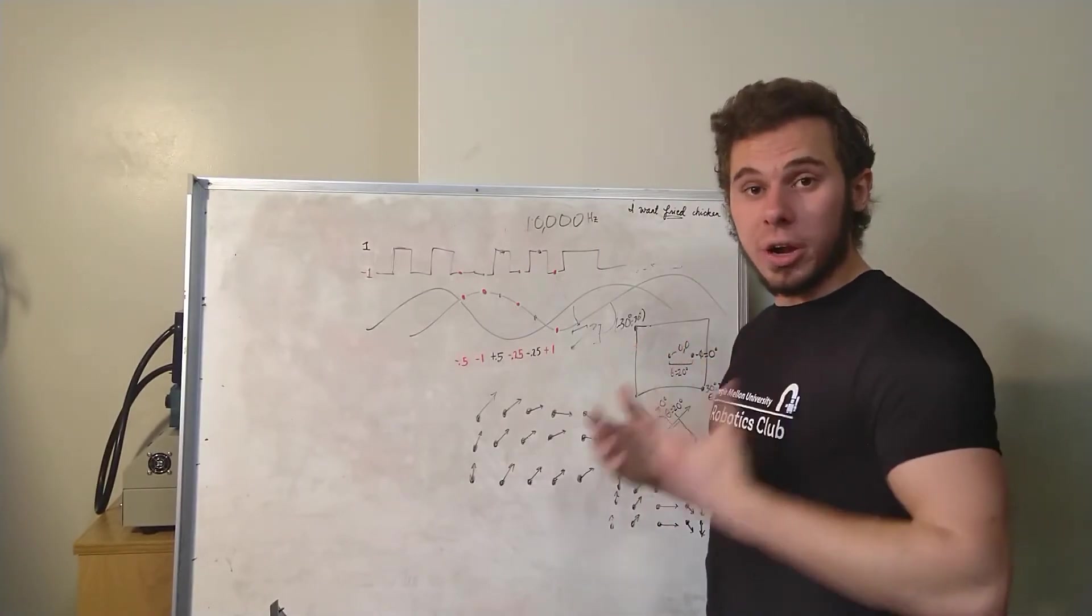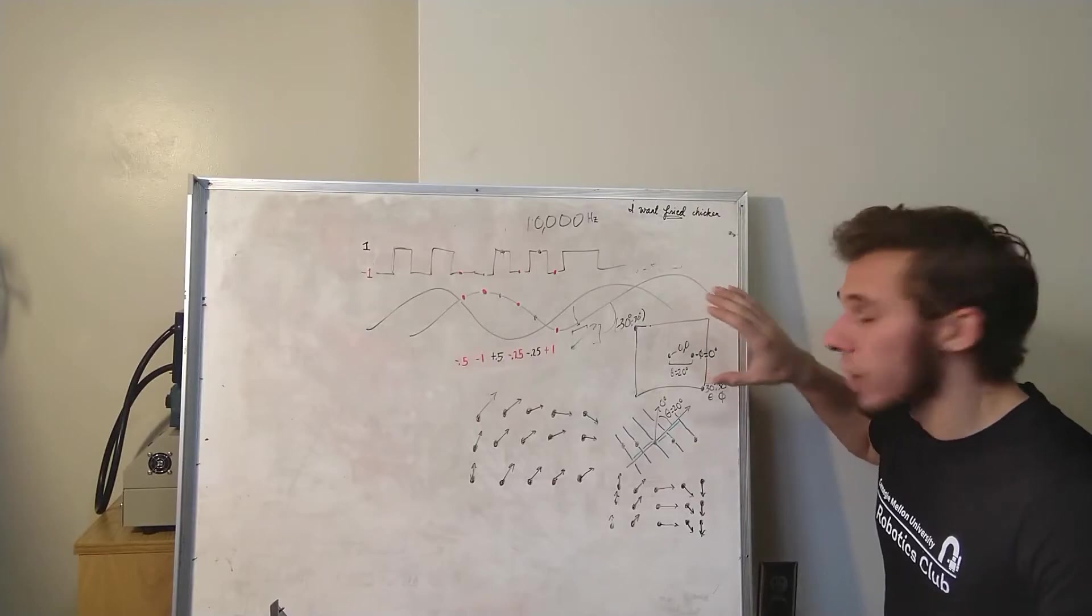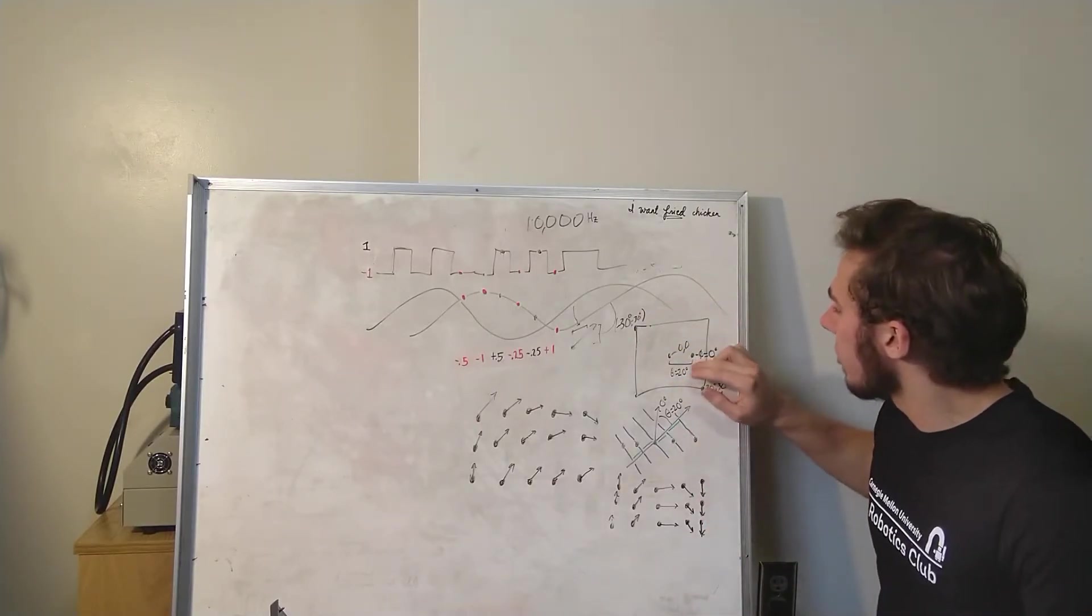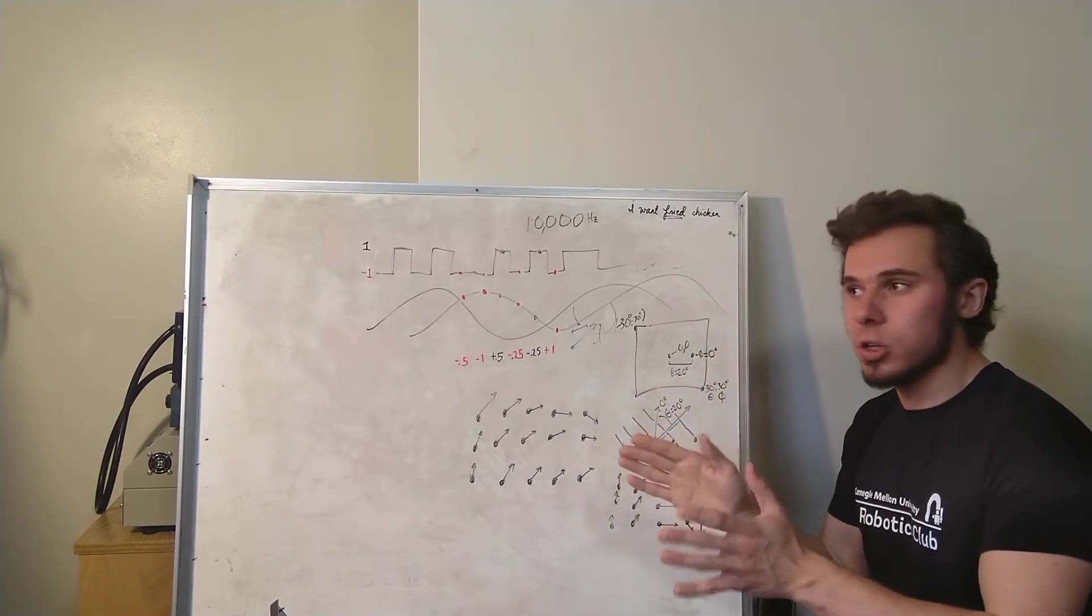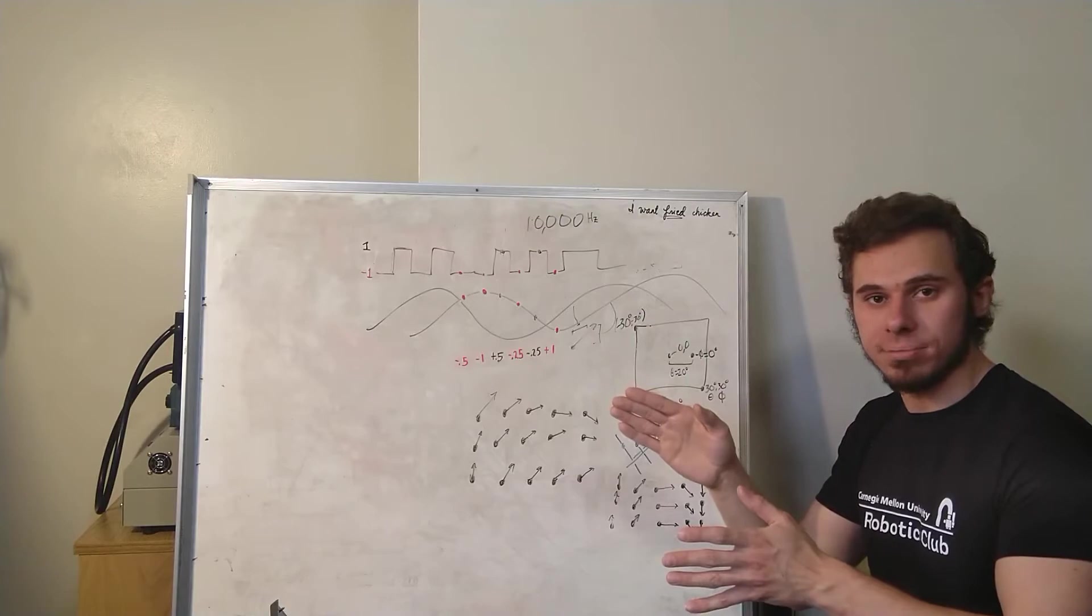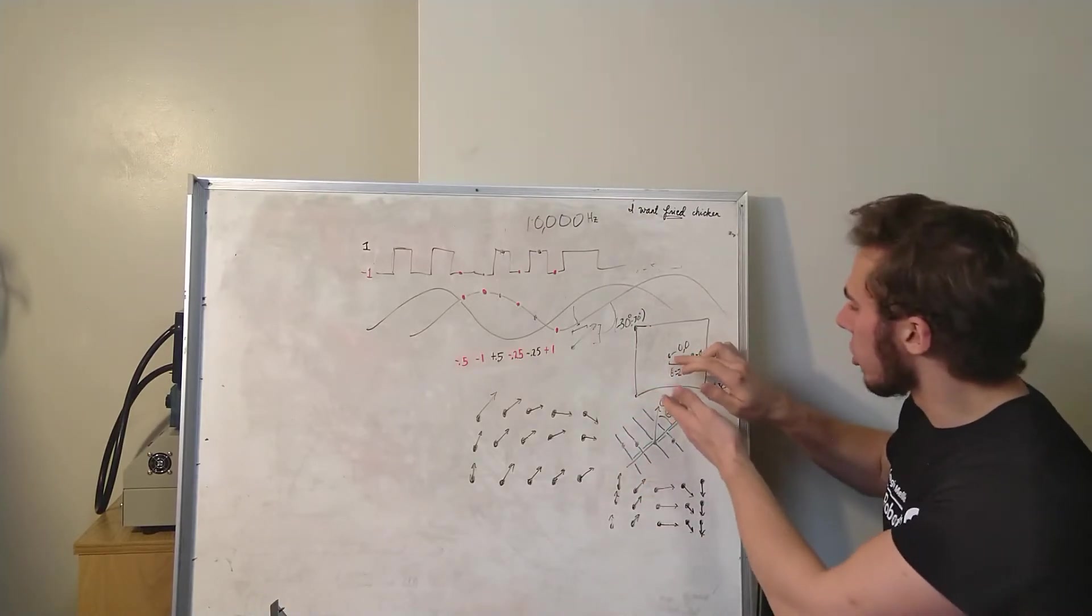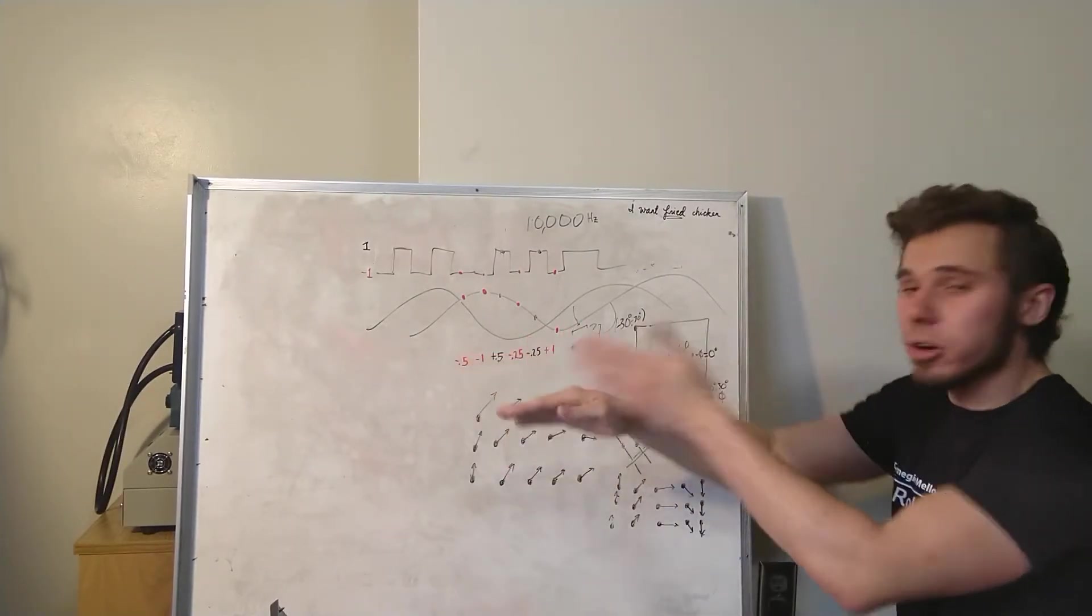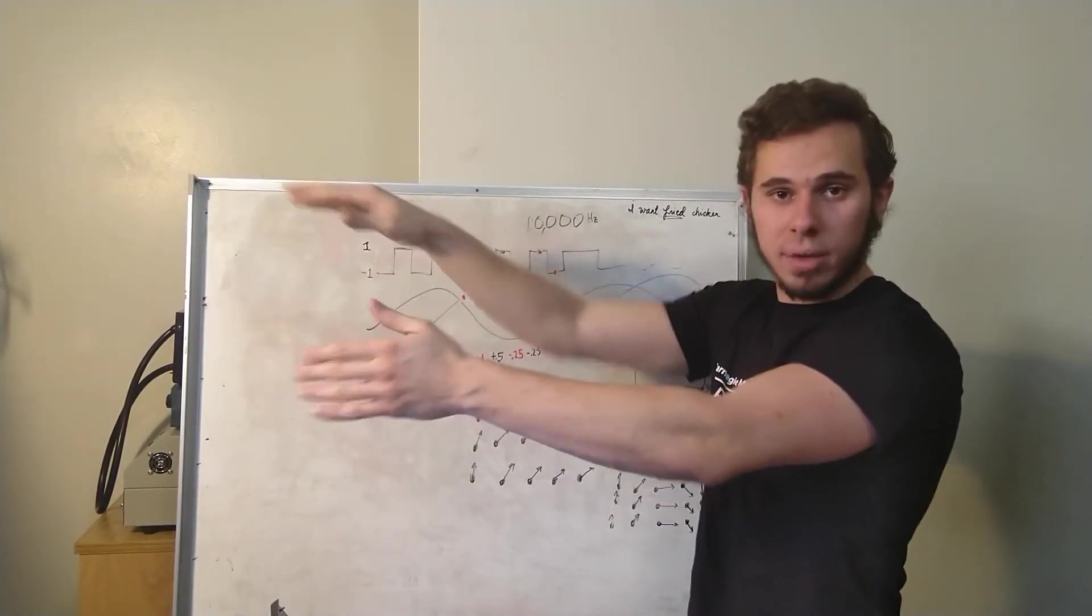So to then generate our actual image, we first look at the resolution of our image and the field of view of our image to figure out for each pixel, what angle of arrival do we expect the sound to come from. So in this case, a pixel here in the image might correspond to 20 degrees in x, so 20 degrees off center in x, and 0 degrees in y. A pixel up here would correspond to say 20 degrees in x and 10 degrees in y.